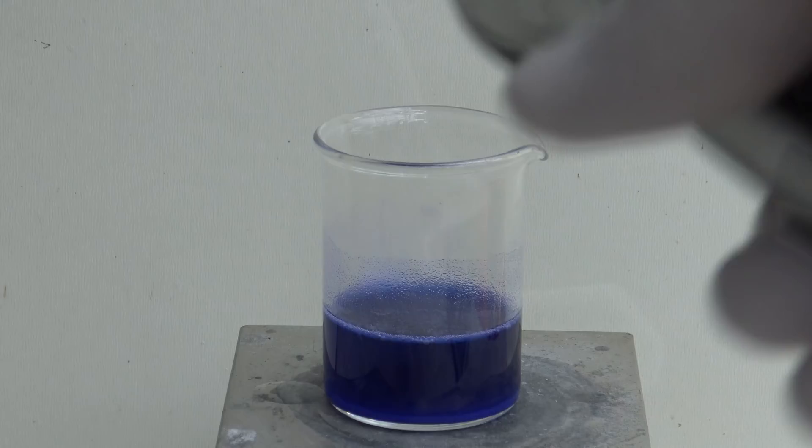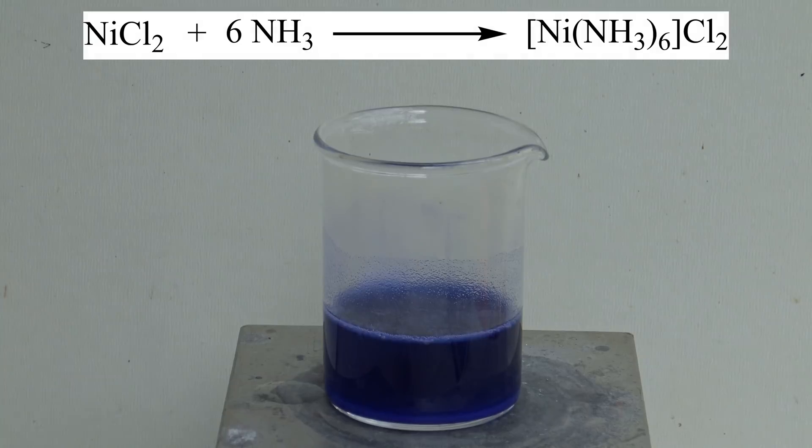The following reaction takes place: the nickel chloride reacts with the ammonia to form the complex hexamine nickel chloride. This precipitates, which is increased by the addition of the ammonium chloride.